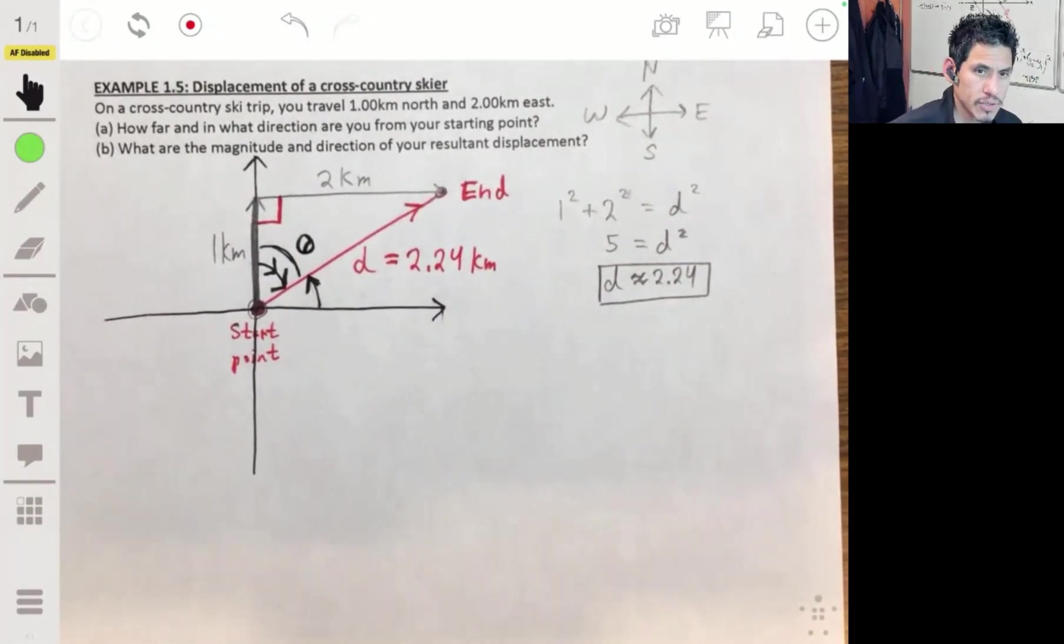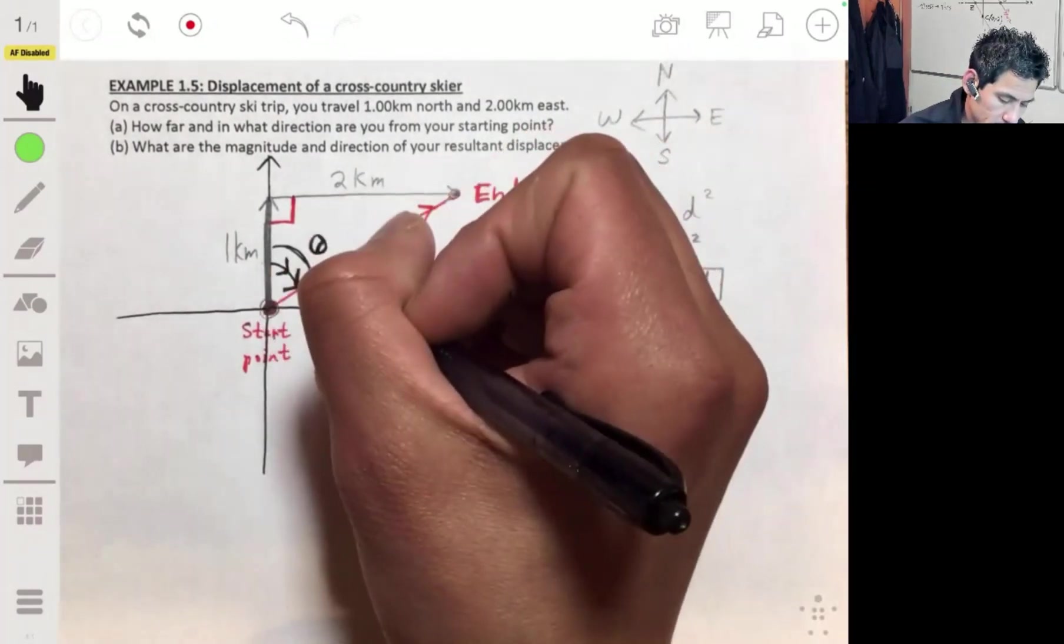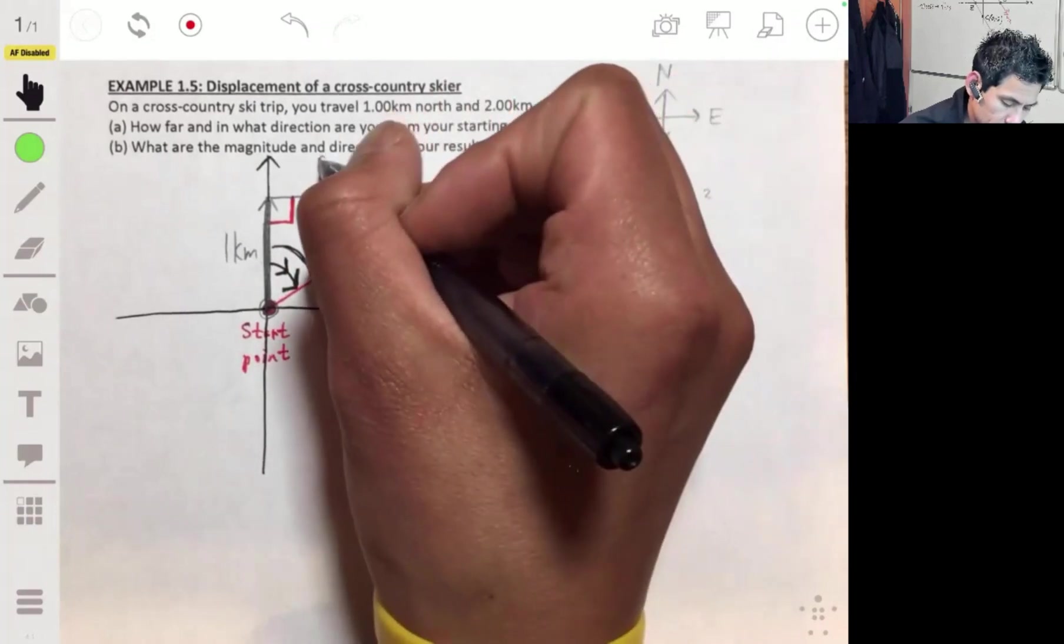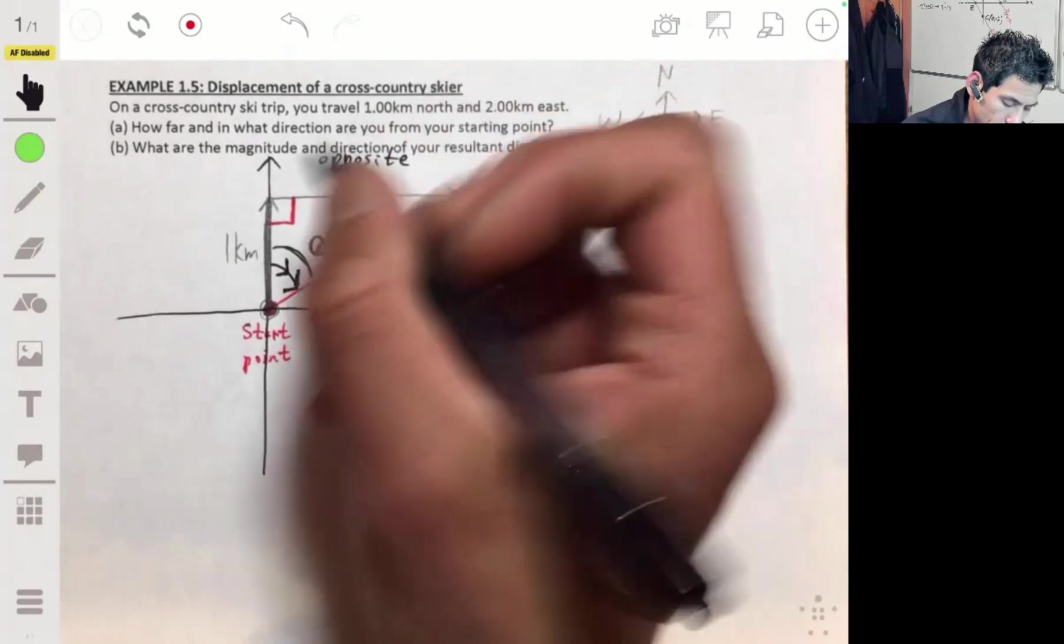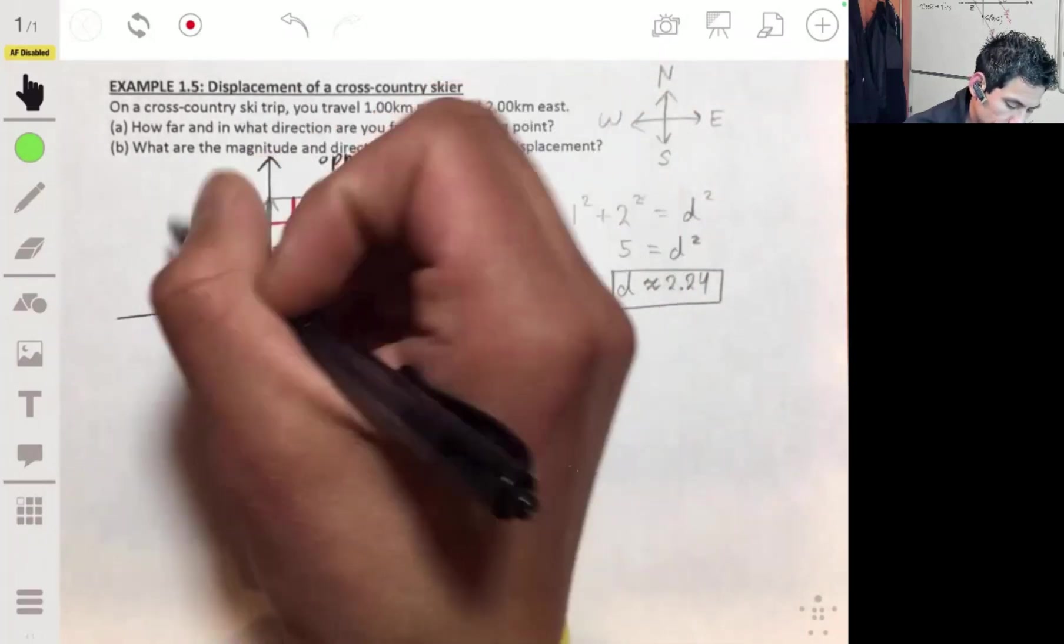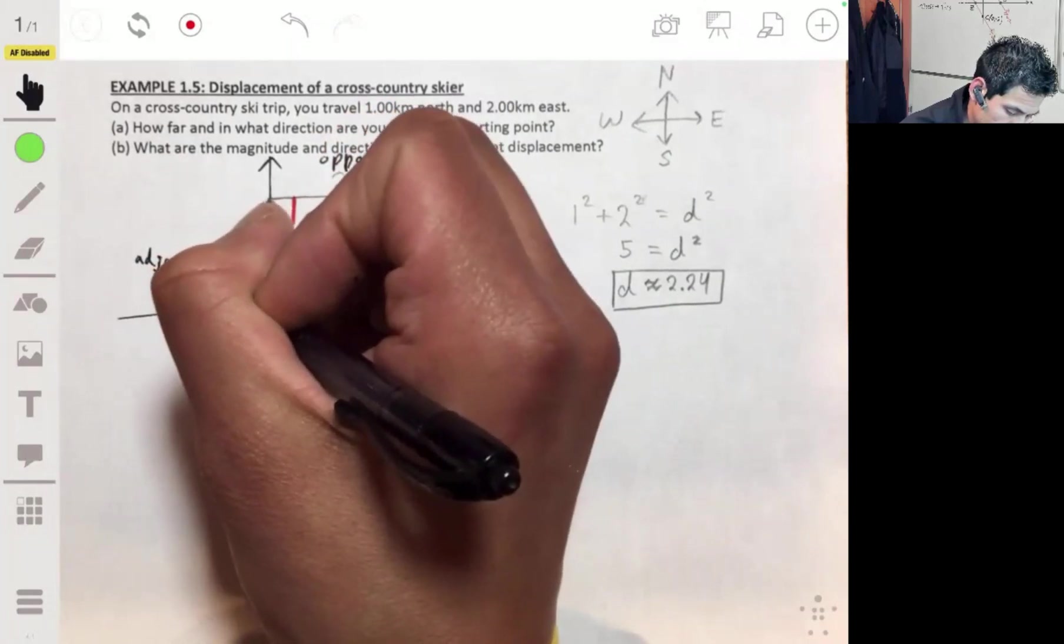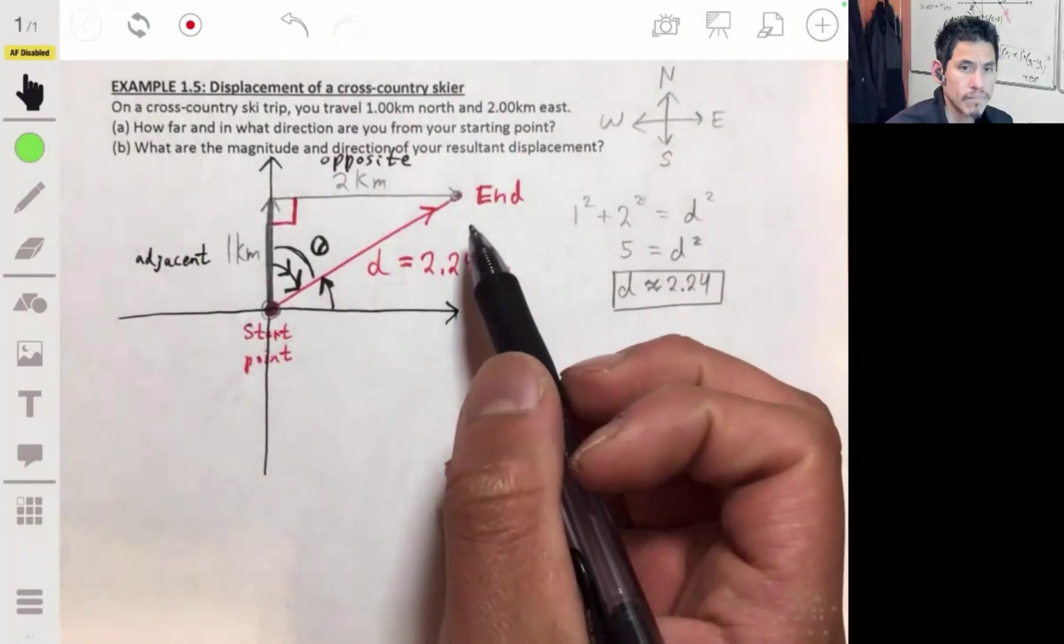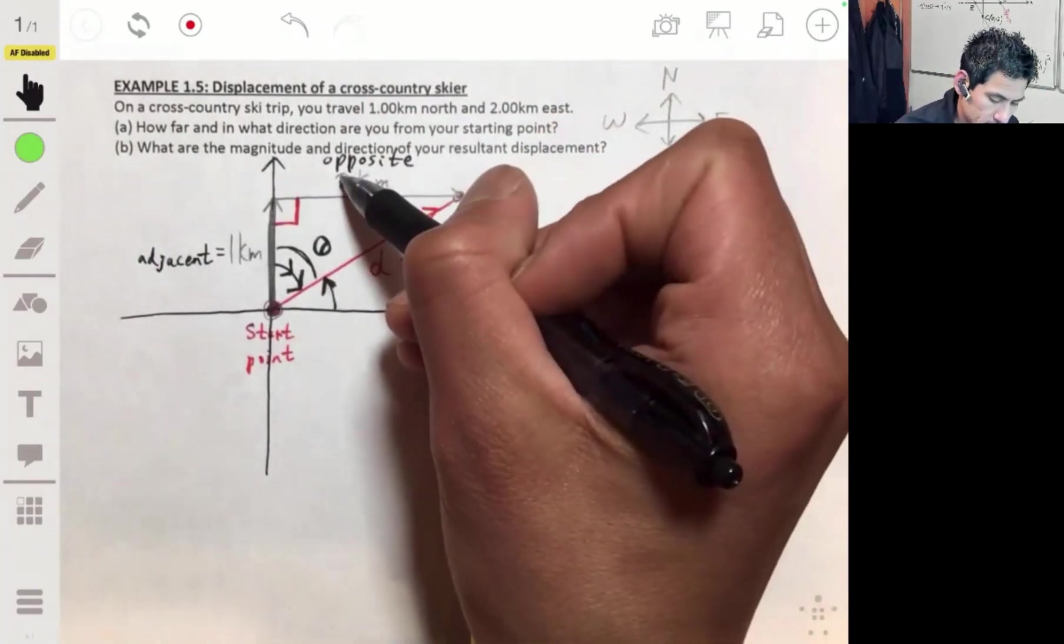Now, let's remember our trigonometry. So this is our angle. Then this leg is going to be the opposite side, and this side is going to be the adjacent. The adjacent is one kilometer. The opposite leg is two kilometers.